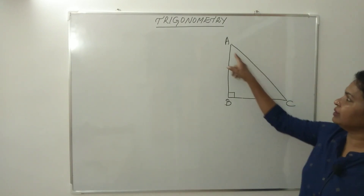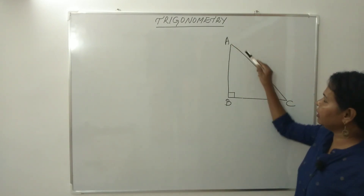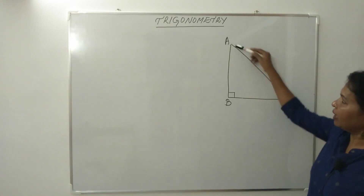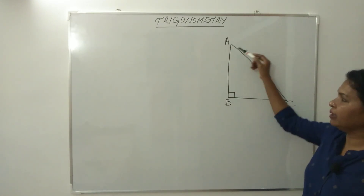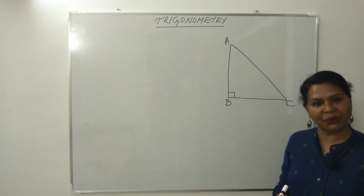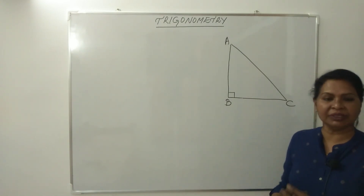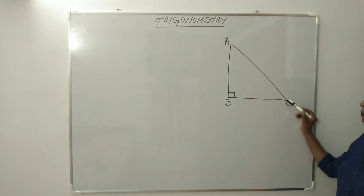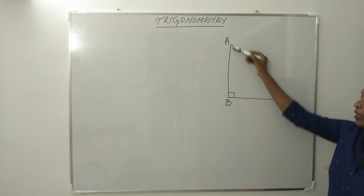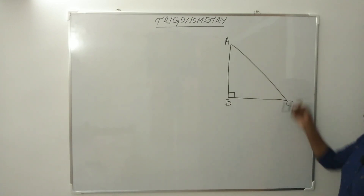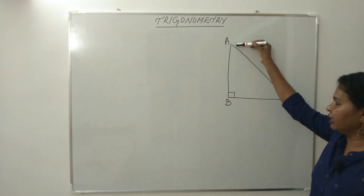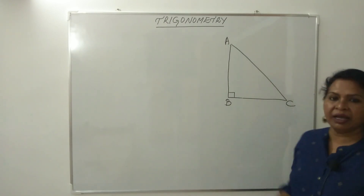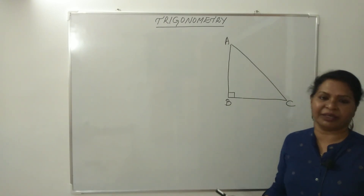If we consider angle A, then the opposite side is BC, the adjacent side is AB, and AC is the hypotenuse. So for angle A: BC is the opposite side, AB is the adjacent side, and AC is the hypotenuse. Now we have trigonometric ratios.